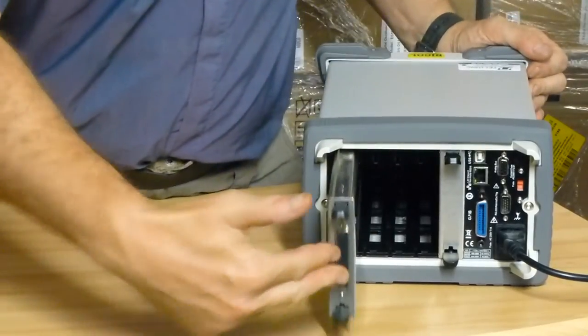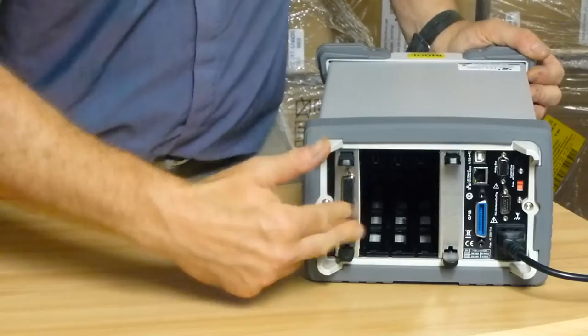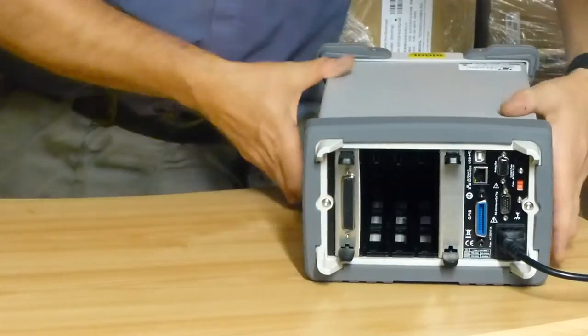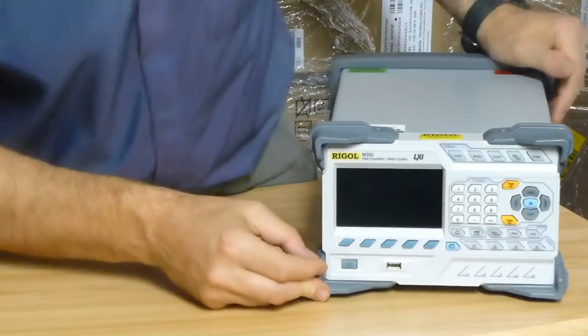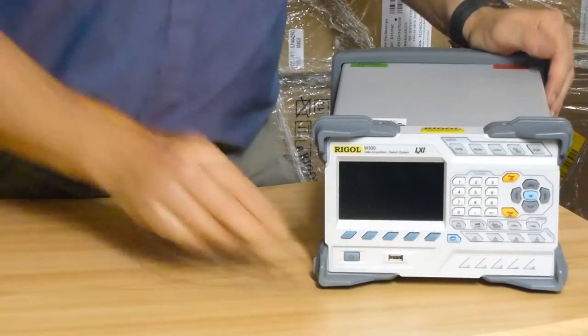What I'm doing now is I'm sliding the MC3132 card into the back of the system. So that's all you have to do to physically set up the system.